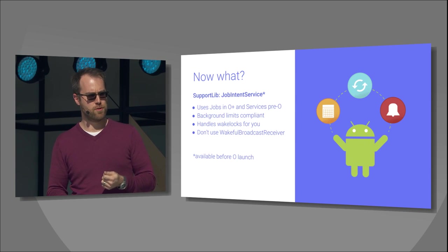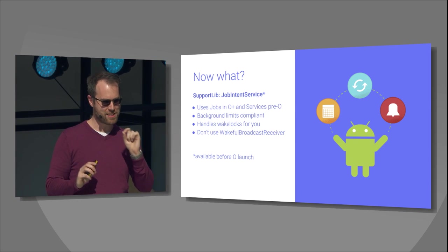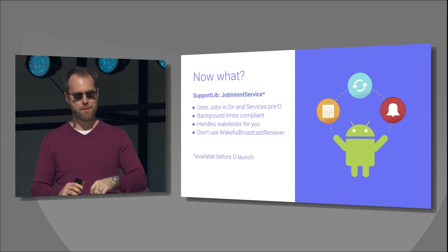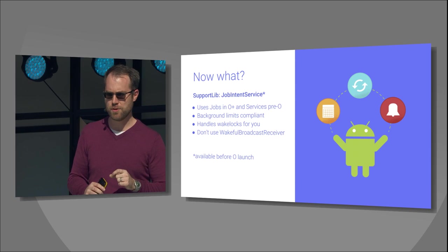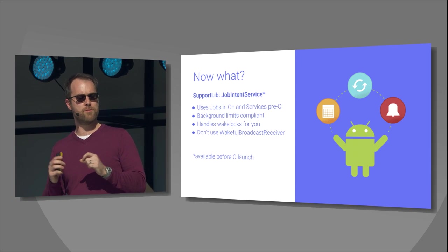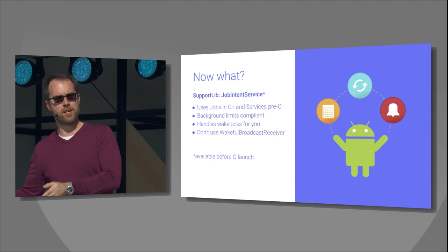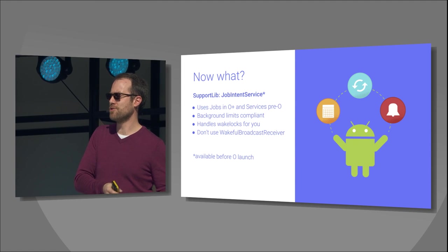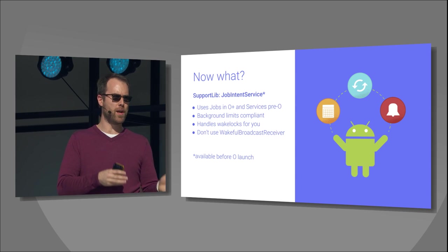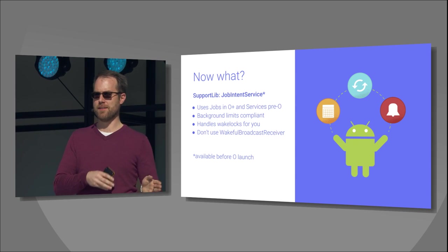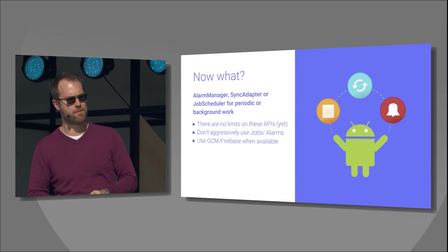Something new is called the job intent service. It just missed the window for the 26 beta but will be coming out shortly before O launch. It's a strategy where you can use job intent service on O to get backwards-compat support — using jobs when you're on O and falling back to services pre-O automatically. The really nice part about that fallback is we'll handle the wake locks for you, so you don't have to worry about leaks or mistakes there. Definitely take a look at this when it comes out — it's going to make your lives a lot easier to adopt.